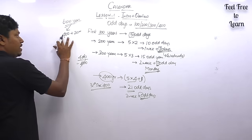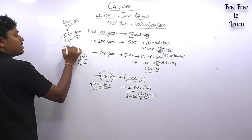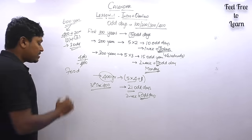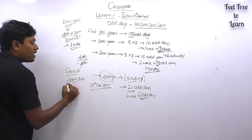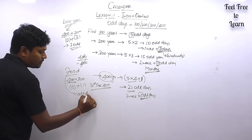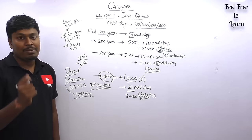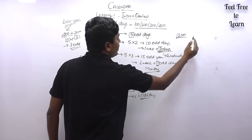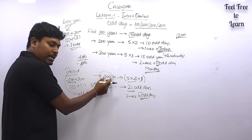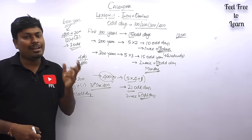Using these base values: for 600 years = 400 + 200 → 0 + 3 = 3 odd days. For 700 years = 400 + 300 → 0 + 1 = 1 odd day. For 1200 years = 400 × 3 → 0 odd days. Every multiple of 400 years has 0 odd days. So 400, 800, 1200, 1600, 2000 all have 0 odd days. By keeping 400 as the base, you can easily find the answer.